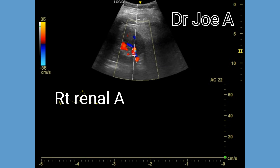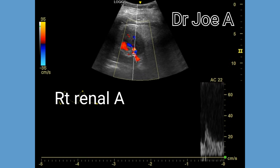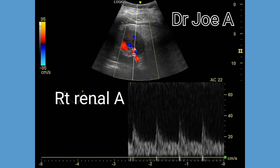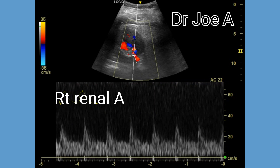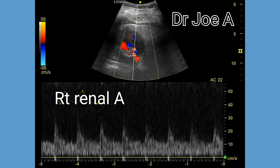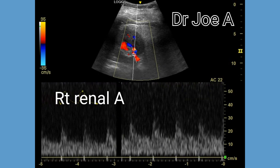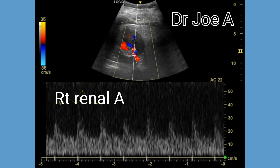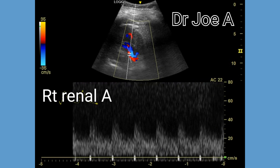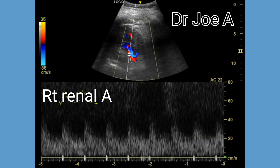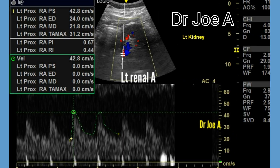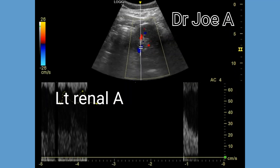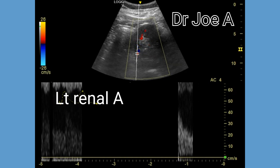A lot of patience is required to obtain a proper spectral Doppler study of the renal arteries due to patient movement, especially breathing movements. Whilst doing a renal artery Doppler, it is important to avoid the renal veins as this may cause an artifact and an improper spectral Doppler tracing of the renal arteries.